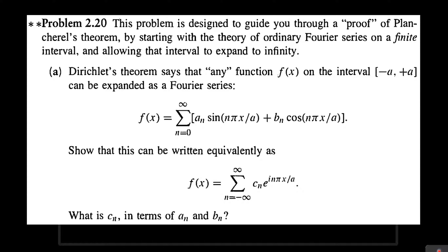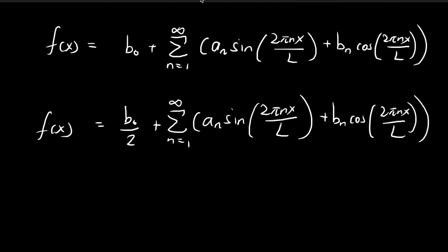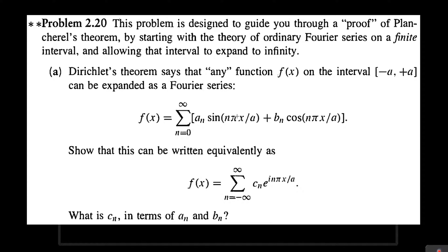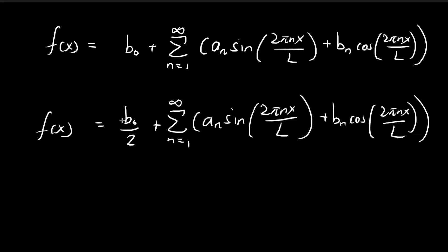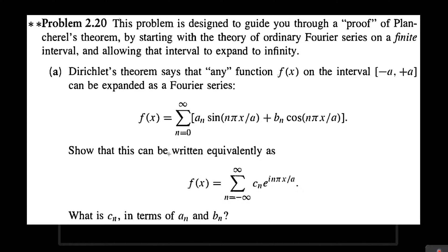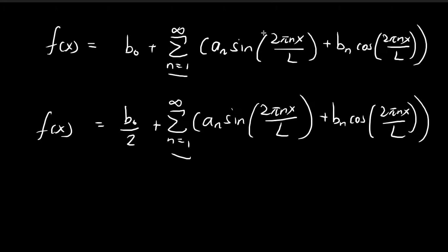If you've studied Fourier series before, you might be familiar with expressions that look something like this. Usually the numerator is 2πn instead of nπx, and sometimes you might see the constant b being pulled out, with the summation starting from 1 instead of 0. It doesn't really matter how you express it — it's essentially the same thing. For expressions like this, there is an l, which represents the length of the range.